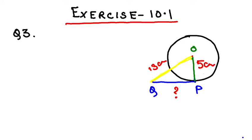PQ is a tangent to the point of contact P. The radius of the circle OP is 5 centimeters, and OQ is 13. So OP is 5 and OQ is 13. This information is given, and you have to find the value of PQ.